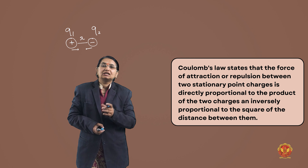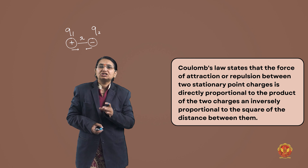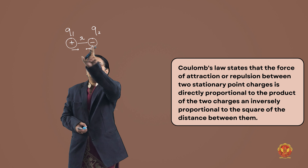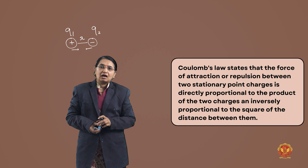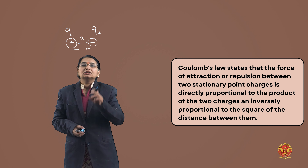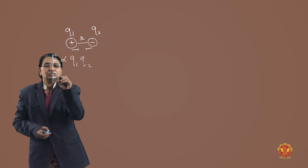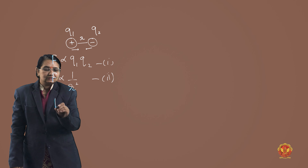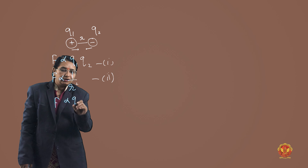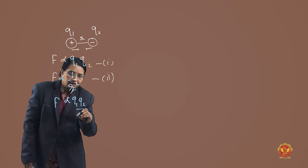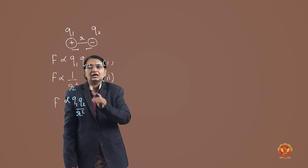The force of attraction or repulsion is directly proportional to the product of the two charges Q1 and Q2, and inversely proportional to the square of the distance R between them. These give us two proportionality statements: F ∝ Q1·Q2, and F ∝ 1/R². Combining both, F ∝ Q1·Q2 / R².